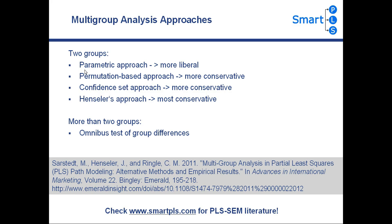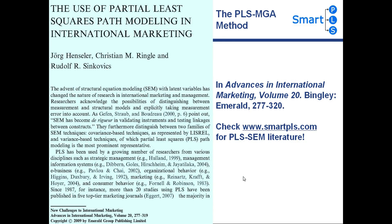For the techniques that compare two groups of data, they find that the parametric approach is the most liberal technique. In contrast, the permutation-based approach and the confidence set approach are more conservative. Henseler's Multigroup Analysis approach is the most conservative. We would like to focus on a fifth technique, the PLS Multigroup Analysis or PLS-MGA, proposed by Henseler, Ringle, and Sinkovics in an article published in Advances in International Marketing.